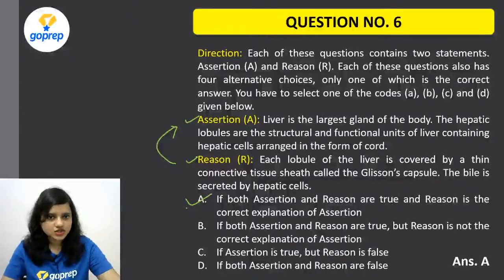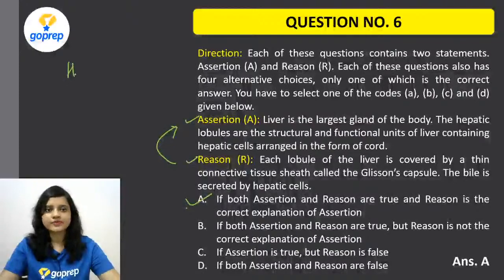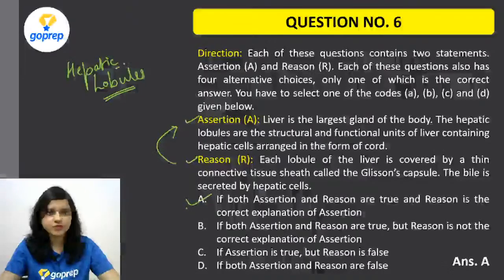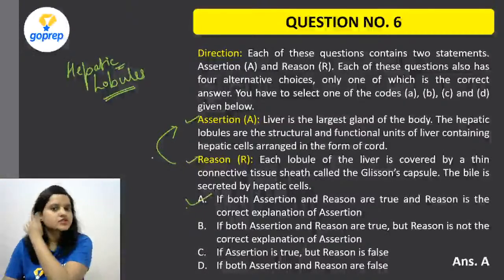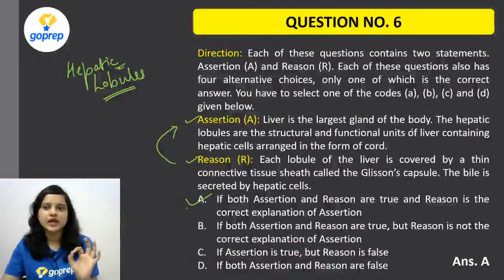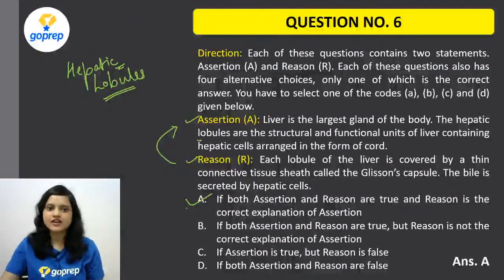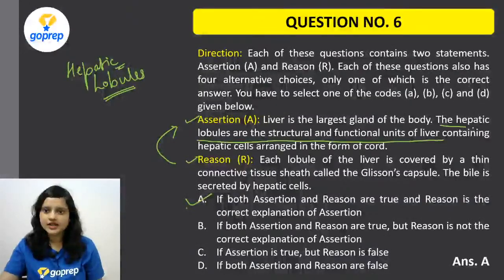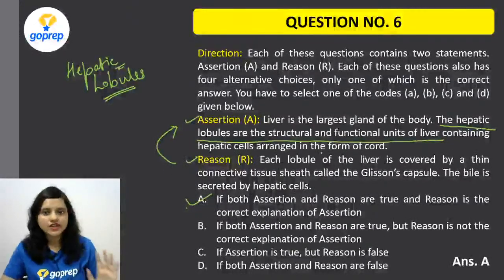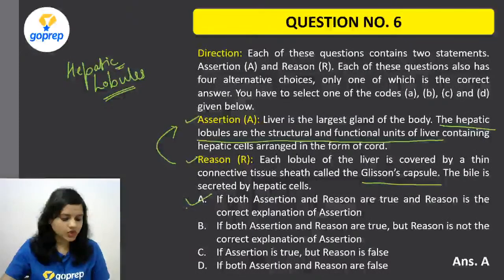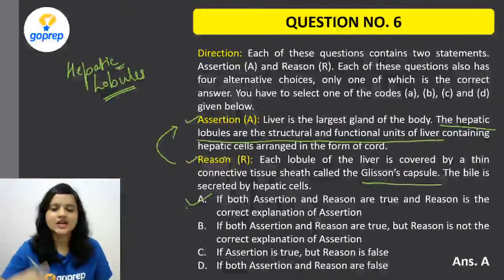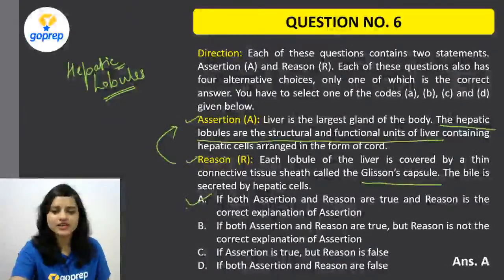So the structural and functional unit of liver is hepatic lobules — remember that. Hepatic lobules are covered by Glisson's capsule. Liver is the largest gland — absolutely correct. Hepatic lobules are the structural and functional unit of liver — this is a very important statement, a question can come on this too. And hepatic lobule is covered by Glisson's capsule.